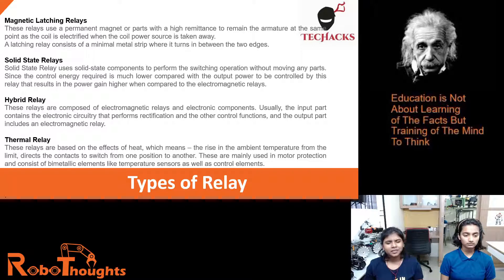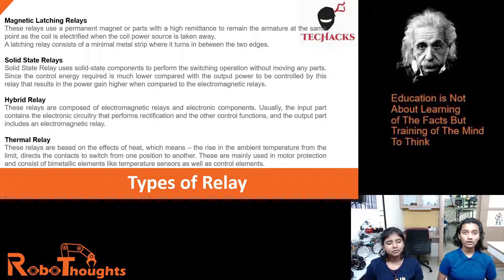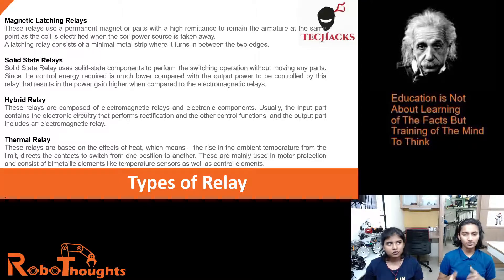Hybrid relays are composed of electromagnetic relays and electronic components. Usually the input part consists of electronic circuitry that performs rectification and other control functions, and the output part includes an electromagnetic relay. Thermal relays are based on the effect of heat — a rise in ambient temperature beyond the limit causes the contacts to switch. These are mainly used in motor protection and consist of bimetallic elements like temperature sensors and control elements.